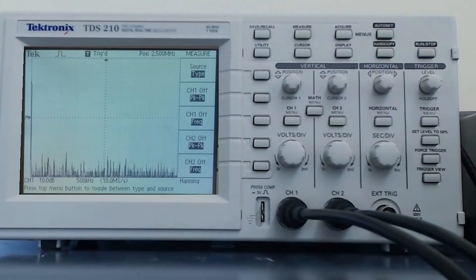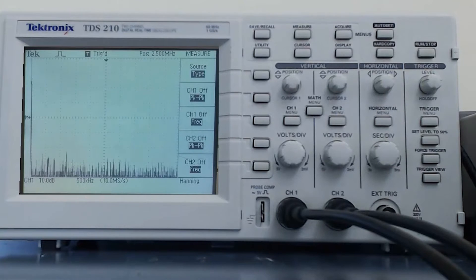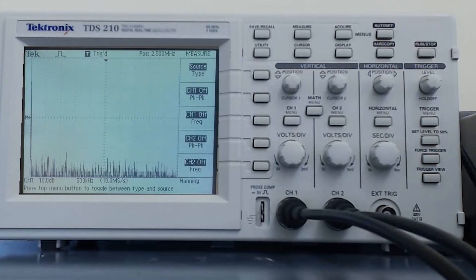Now I will press the measure button. The measure button changes the right hand of the display to show a variety of measurements that the oscilloscope can perform. The top menu button allows us to select source or type. Source allows us to select which channel the measurement is taken from.